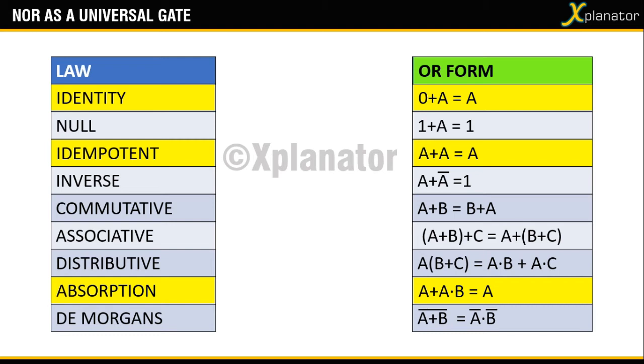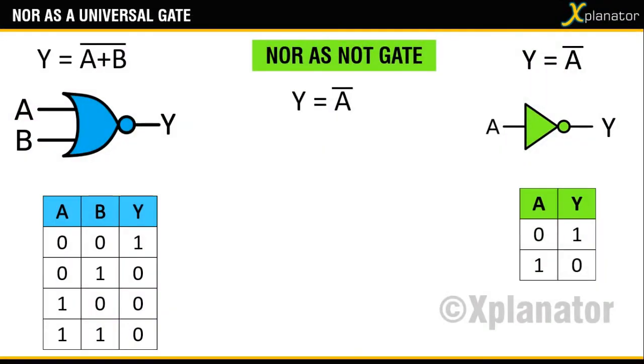So, this means there are two different ways in which you can use a NOR gate to represent NOT. Let us try the identity law first. Now, according to this law, 0 plus A gives you A.